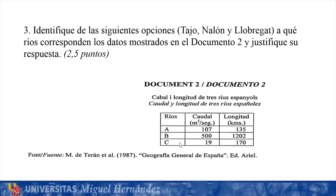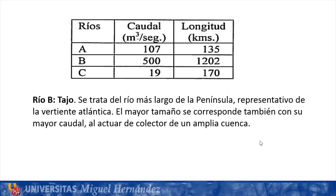We see that the document presents three rivers with different values of flow in cubic meters per second and of length. The easiest to identify is river B — the Tajo — because it is the longest river in the peninsula: 1,202 kilometers as shown here. This river is representative of the Atlantic watershed. Its greater size also corresponds to its greater flow, since it acts as a collector for a wide basin.